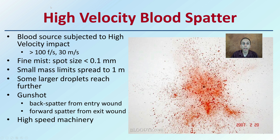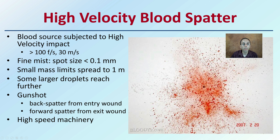High velocity blood spatter produces a fine mist with spot size less than 0.1 millimeters. Small mass limits spread to about one meter, though some large droplets can reach further. This is typically evident from a gunshot — the back spatter from an entry wound, the forward spatter from an exit wound, or as a result of high-speed machinery. You can clearly see the visual difference that high velocity blood spatter produces.